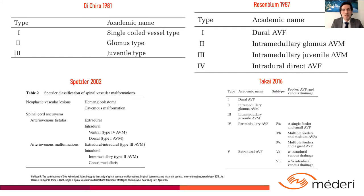Multiple classification schemes have been developed over the years. The most frequently used is the one described by Rosenblum in 1987, which classifies AVMs in four types. Type 1 is the Dural AVF. Type 2 is the Intramedullary Glomus AVM. Type 3 is the Intramedullary Juvenile AVM. And type 4 is the Intradural Direct AVF.